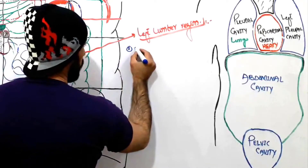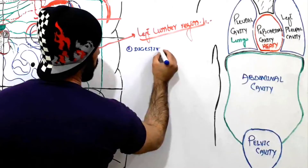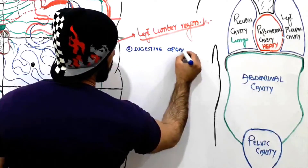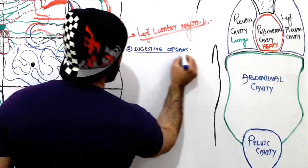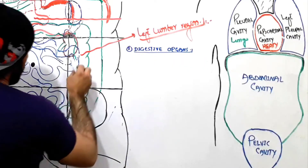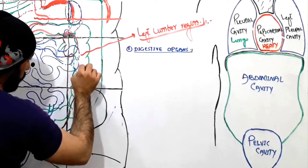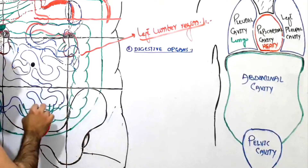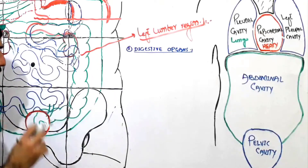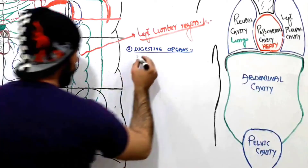The first group of organs we see in the left lumbar region are the digestive organs. In our left lumbar region, some parts of the small intestine are found, and also the descending colon. These two important parts play their role in the digestion of food and are found in the left lumbar region.